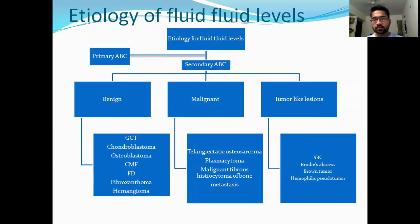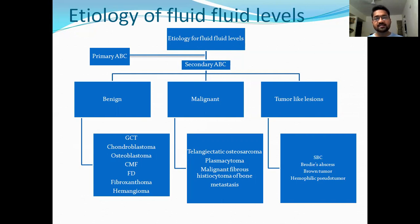Now we should learn about the various etiologies of the fluid-fluid levels. The fluid-fluid level could result from primary aneurysmal bone cyst (ABC) or secondary ABC. Secondary is divided into three types: benign, malignant, and tumor-like lesions.